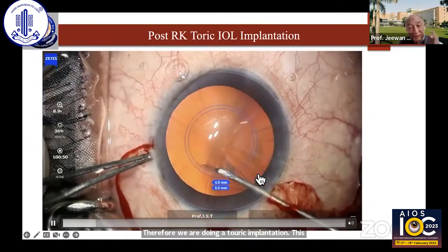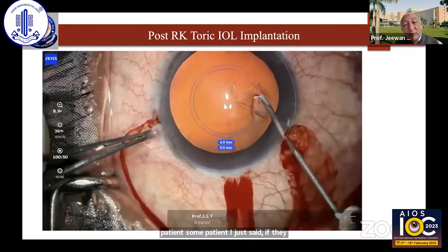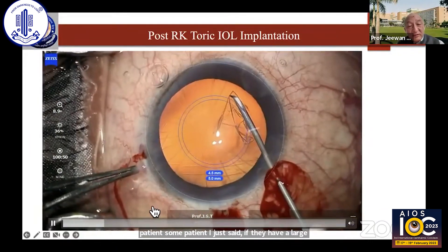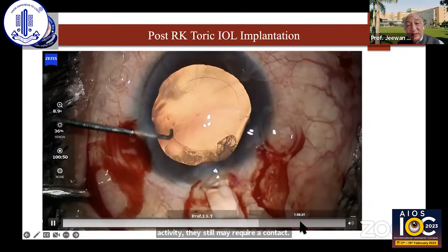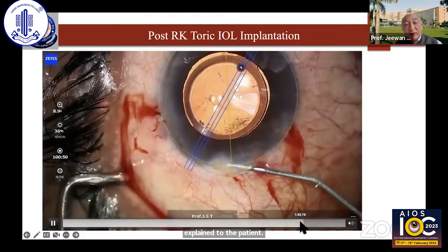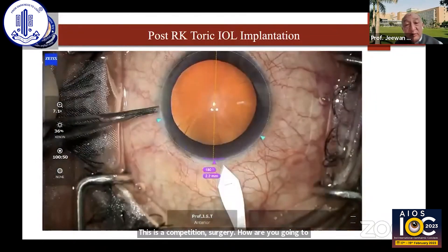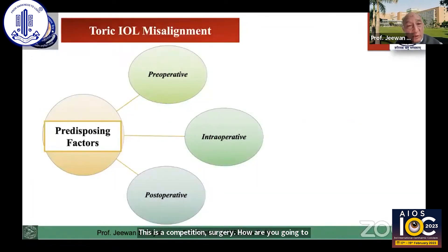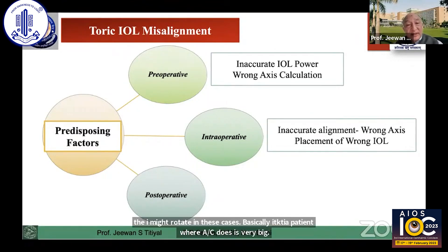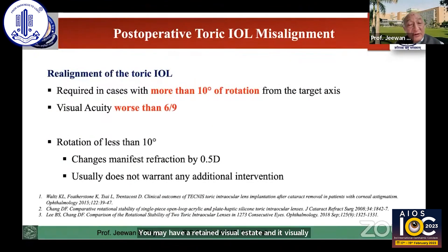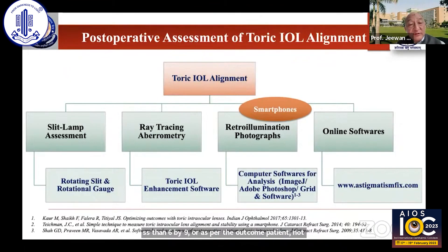So this is one patient who had undergone radial keratotomy. Their corneal astigmatism was significantly higher, but we could get a very nice anterior and posterior corneal curvature with the IL-MESA 700. Therefore, we are doing a Toric implantation in this patient. Some patients, as I said, if they have large ectasia, they still may require a contact lens after the implantation of the IOL. So that part has to be explained to the patient. This is the completion surgery — I'm going to implant the Toric IOL in this patient, and the patient did very well post-op in this case. Sometimes the IOL might rotate in these cases, especially in an ectasia patient where AC depth is very deep. You may have retained viscoelastic. And if vision is less than 6/9, or the patient is not satisfied, and the axis is more than 10 degrees, it may require a re-rotation.